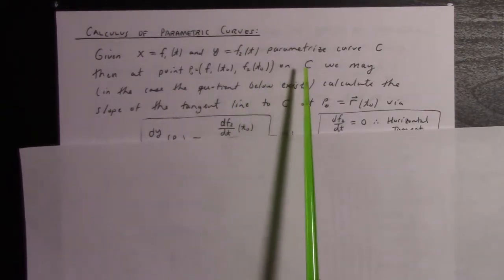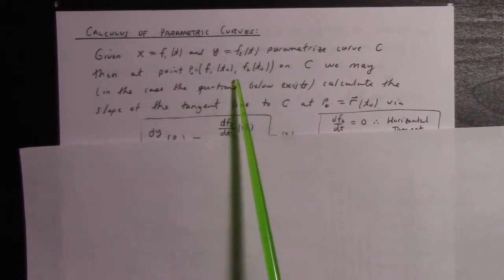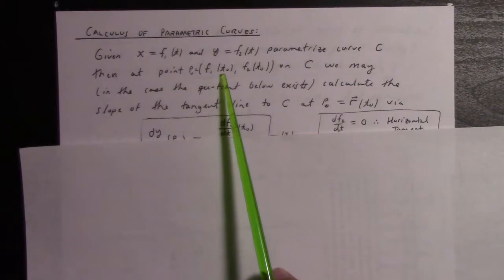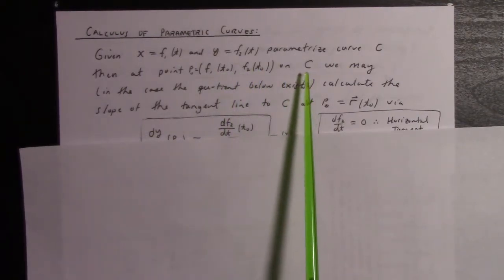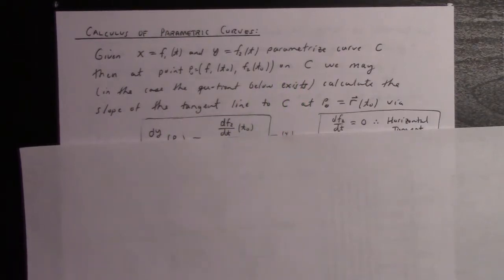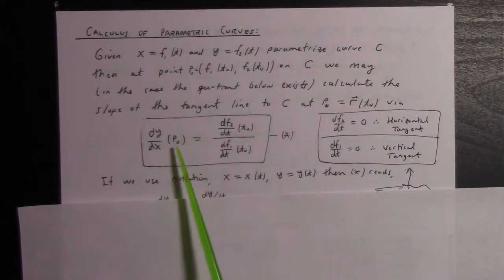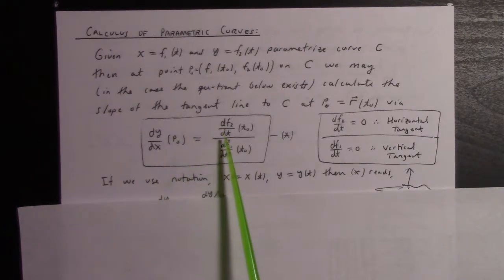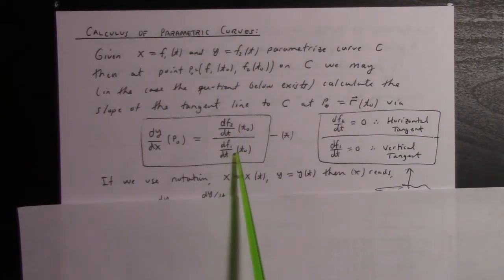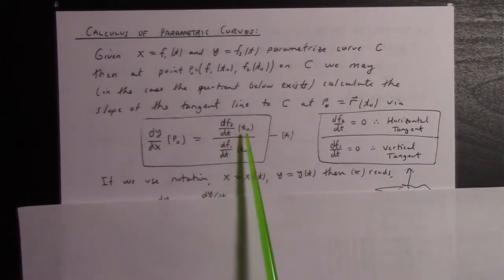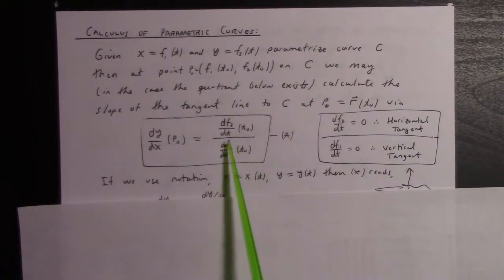First of all, if we have a parametrization of a curve C, then at a point given by parameter T0, we can calculate the slope as follows: dy/dx at point P0 is given by the quotient of the derivative of the y function by the derivative of the x function at T0, provided both exist and the denominator is non-zero.